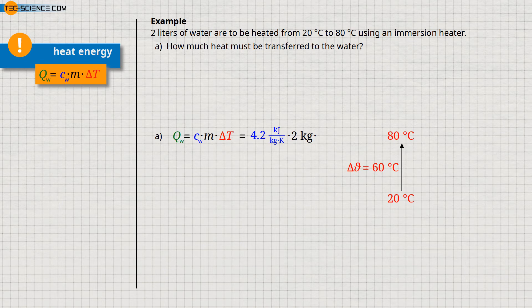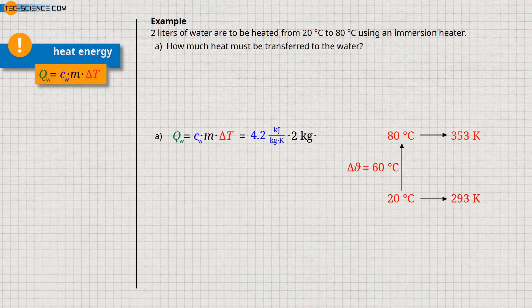To do this, we must first convert the initial temperature of 20 degrees Celsius and the final temperature of 80 degrees Celsius into the unit kelvin. In the kelvin scale, 20 degrees Celsius corresponds to a temperature of 293 kelvin and the temperature of 80 degrees Celsius to a value of 353 kelvin. If we now calculate the temperature change in the kelvin scale, we get a value of 60 kelvin.